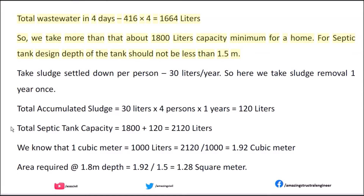Total wastewater in 4 days: 416 × 4 = 1,664 liters. So we take more than that — about 1,800 liters capacity minimum for a home. For septic tank design, the depth of the tank should not be less than 1.5 m. Sludge settled down per person is 30 liters. With sludge removal once per year, total accumulated sludge = 30 liters × 4 persons × 1 year = 120 liters. Total septic tank capacity = 1,800 + 120 = 1,920 liters. Since 1 cubic meter = 1,000 liters, that equals 1.92 cubic meters. Area required at 1.8 m depth = 1.92 ÷ 1.5 = 1.28 square meters.